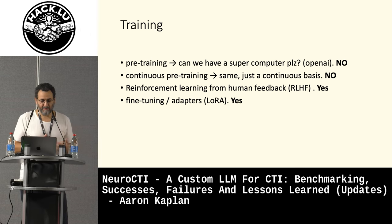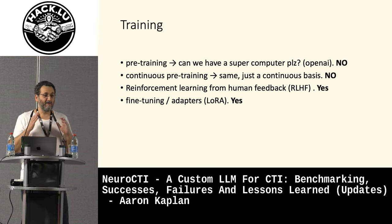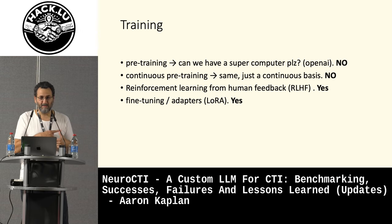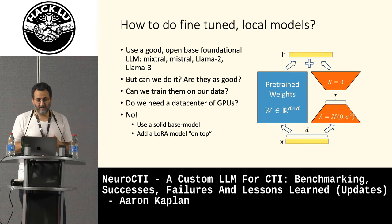There are different types of training. For pre-training and continuous pre-training, you need supercomputers. But for reinforcement learning from human feedback and especially fine-tuning, you can do it yourself. If you restrict your use case to something amendable to LLMs — you don't need a huge general-knowledge model — then you can fine-tune it.